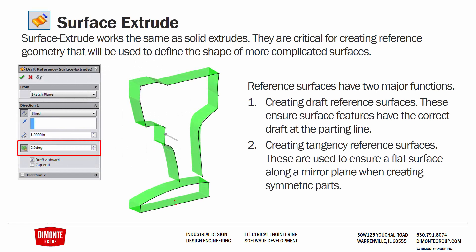First up is the surface extrude. The surface extrude works the same as a solid extrude — you have a sketch profile and you can extrude it in a certain direction. They're critical for creating reference geometry to use to define the shape of more complicated surfaces.